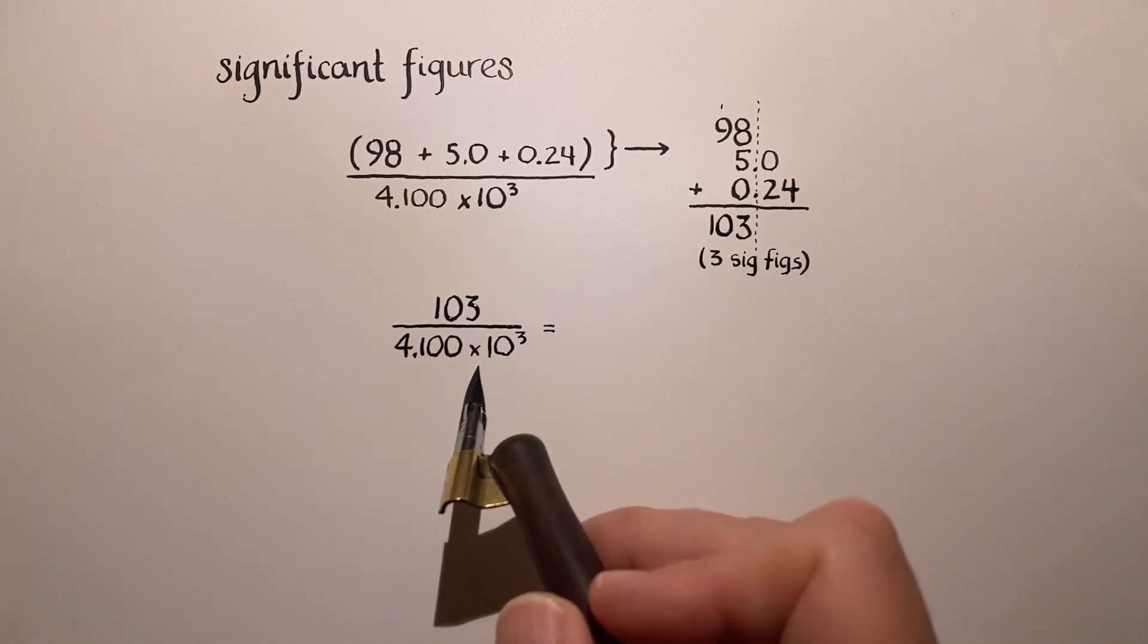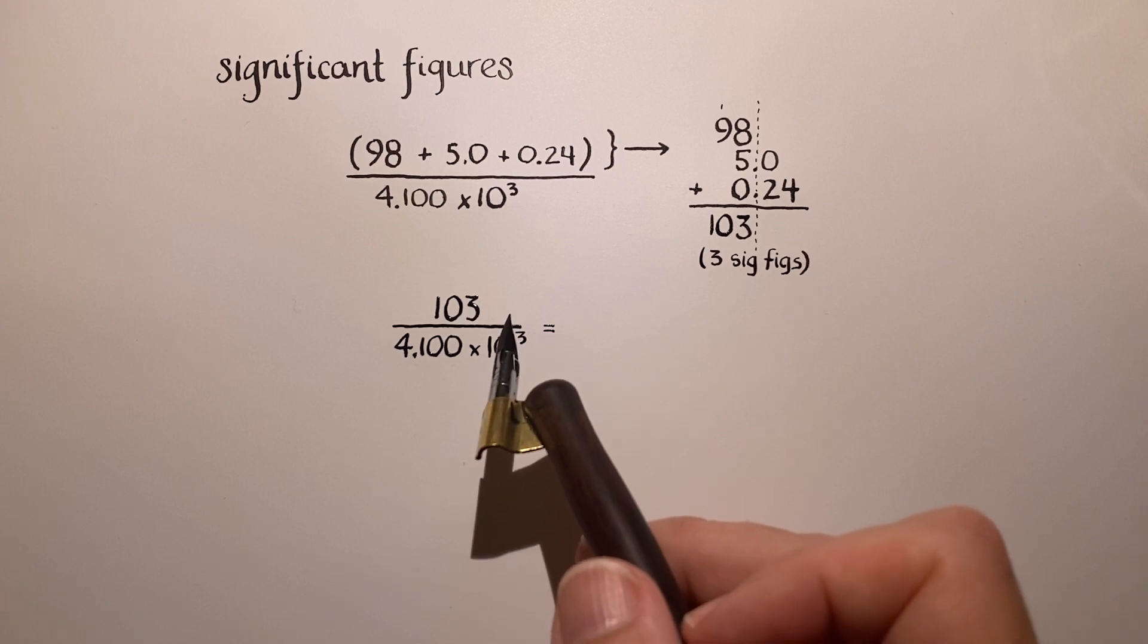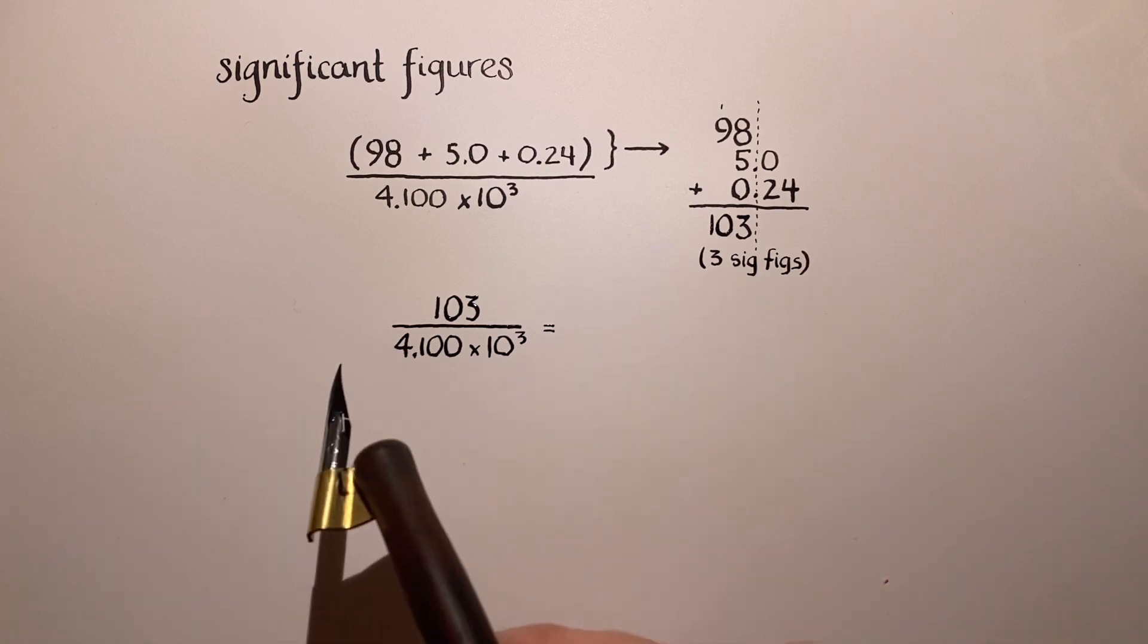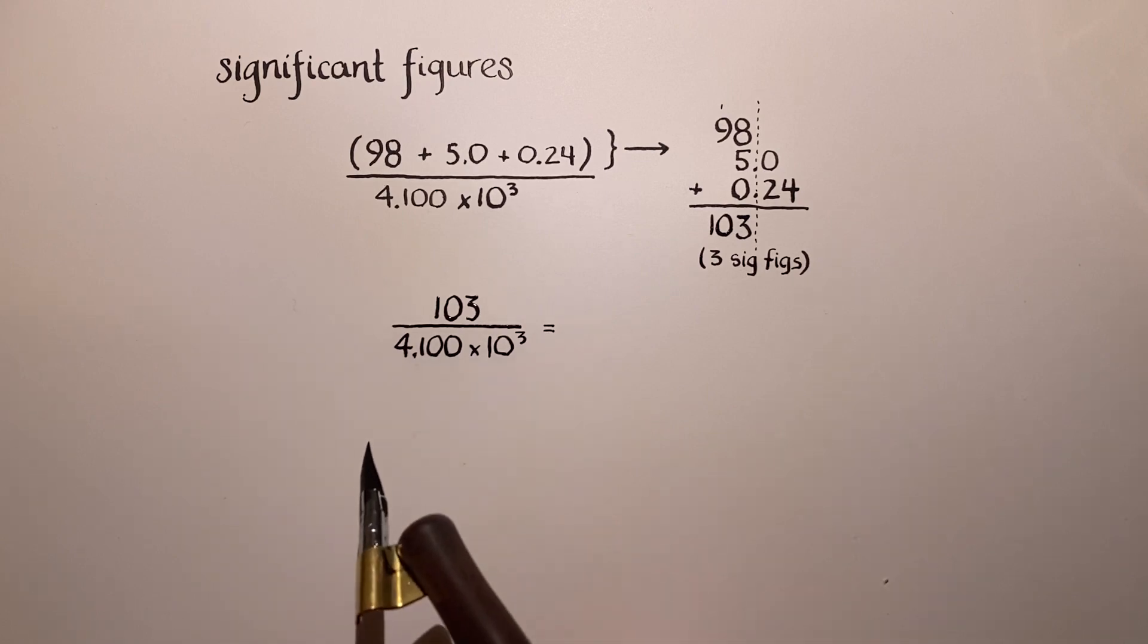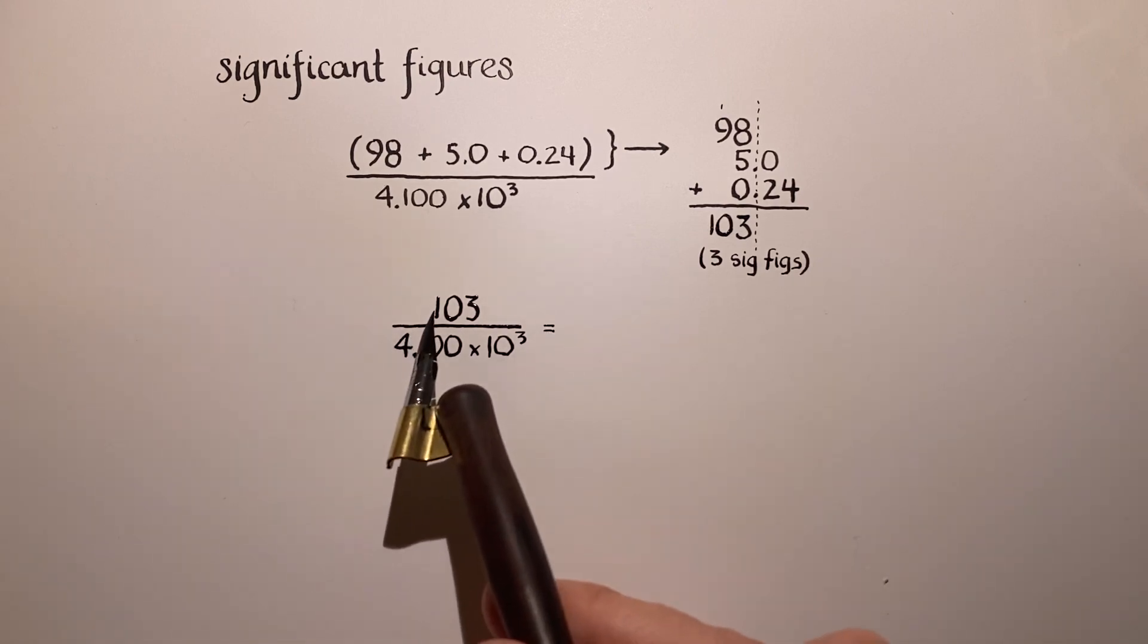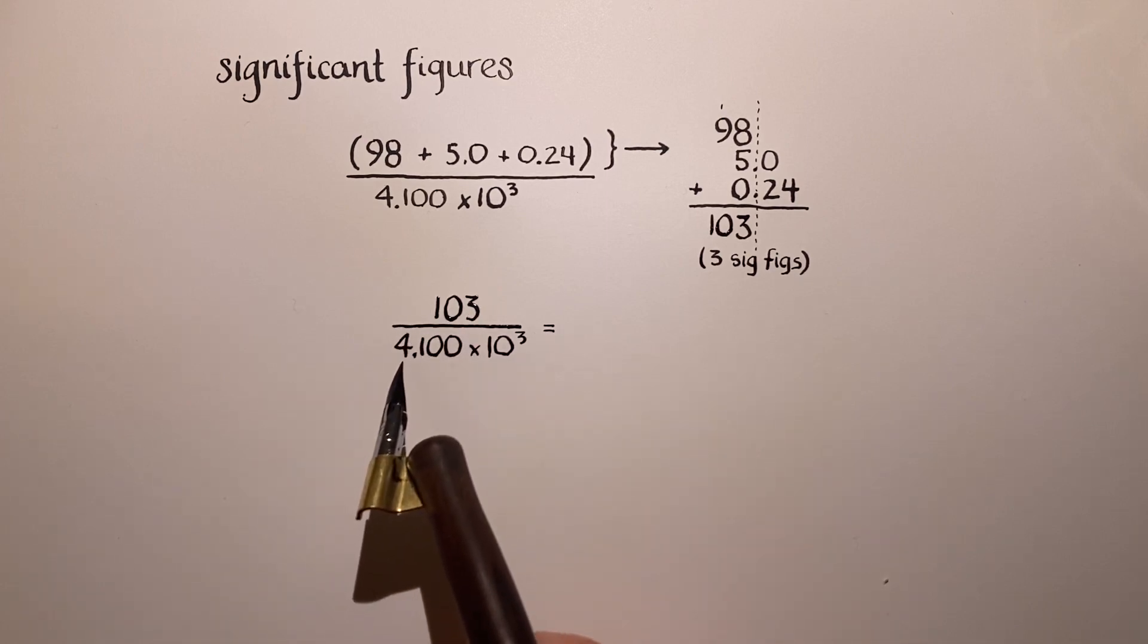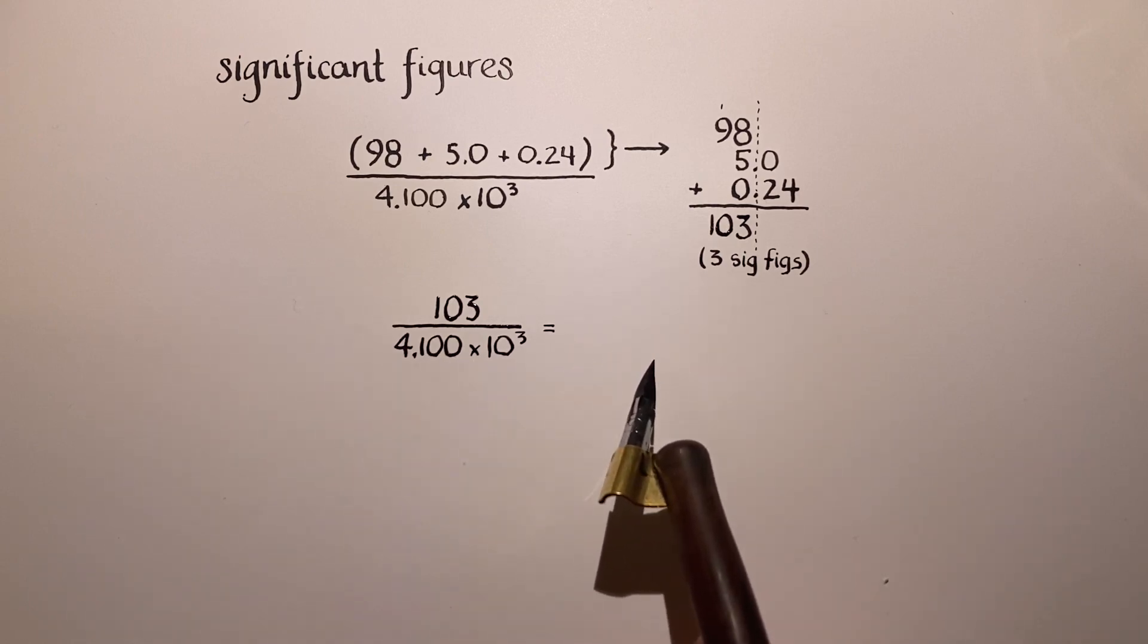Now in this case, we can follow the rules of significant figures when you are multiplying and dividing. And that is the final result here will have the same number of significant figures as whichever one of these has the least number of significant figures. And in this case, we have three significant figures for the 103. For this value, we have four. So the final value will have three significant figures.